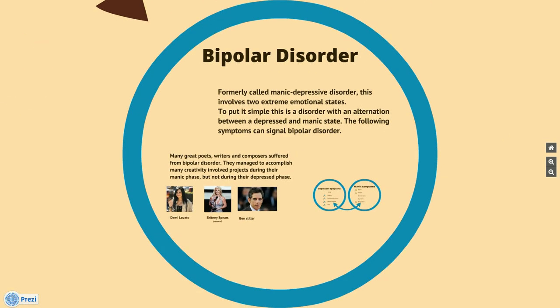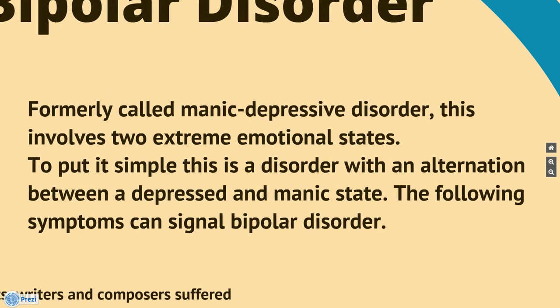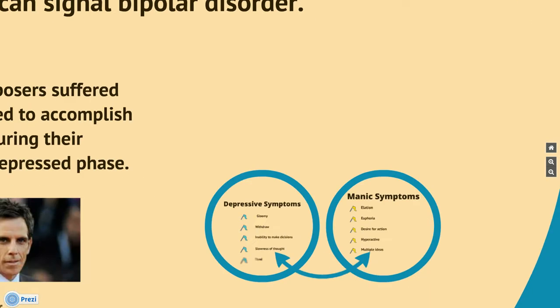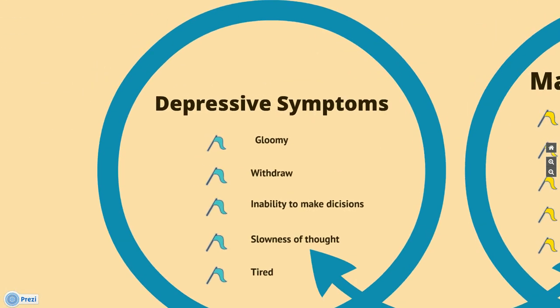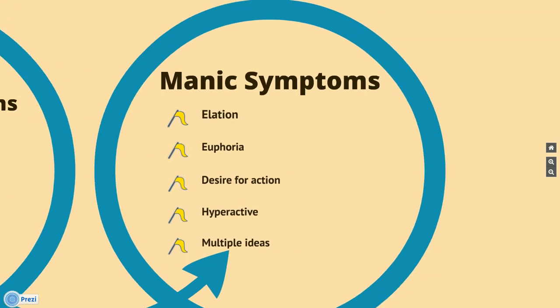The second is bipolar disorder. Formerly called manic depressive disorder, this involves two extreme emotional states. To put it simply, this is a disorder with an alternation between a depressed and manic state. The depressive symptoms can include being in a state of gloom, withdrawing from society, unable to make decisions, the inability to process fast, and showing extreme tiredness. The manic symptoms, which are the complete opposite, mean elation, euphoria, desire for action, hyperactiveness, and multiple ideas.